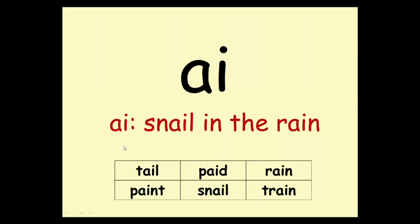This is the A sound. A — snail in the rain. Here are some words: tail, paid, rain, paint, snail, train.